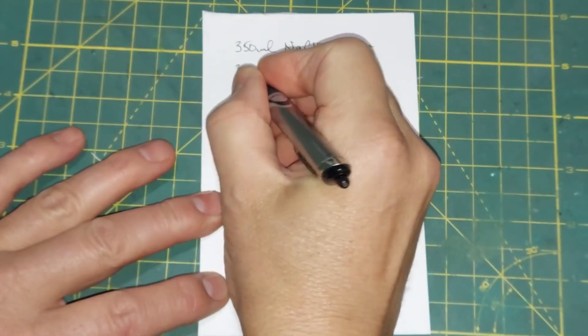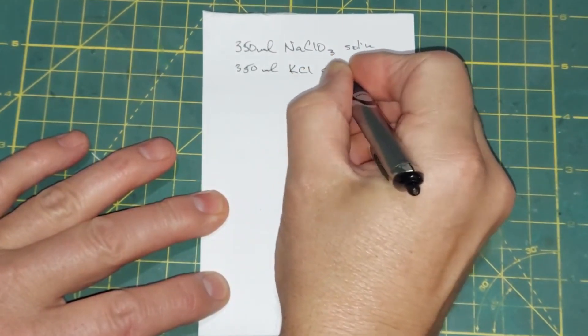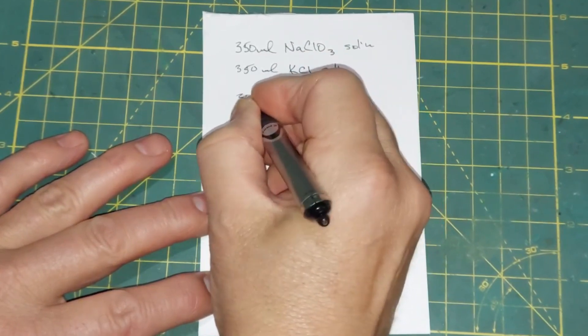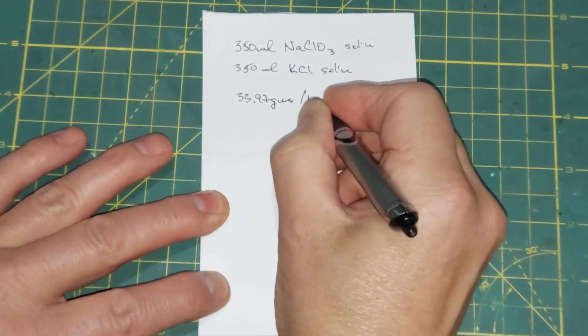And the solubility of potassium chloride is 33.97 grams per 100 milliliters of water. Okay, we'll make this 34 grams. It's so close, so 34 grams is what we'll work with.